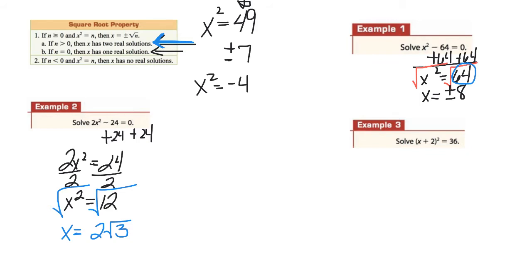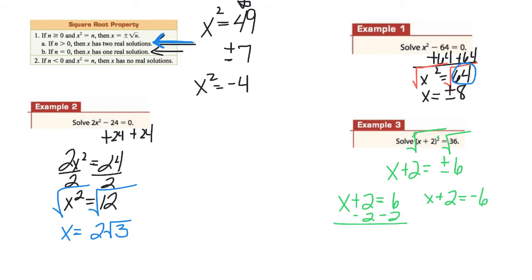For example three, pay close attention. This is already being squared, so the first thing I want to do is take the square root of both sides. That square and square root cancel out, leaving x plus 2 equals the square root of 36. Since n is greater than zero, this is plus or minus 6. Now notice there are two possible answers: x plus 2 equals positive 6, and x plus 2 equals negative 6. Subtracting 2 from both sides in each case, x equals 4 or x equals negative 8. There are two solutions.